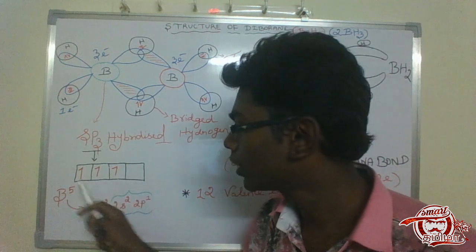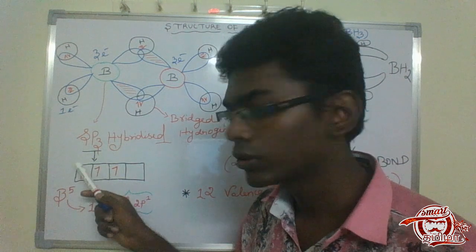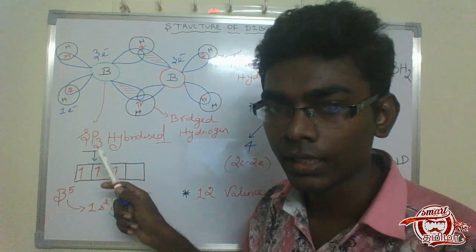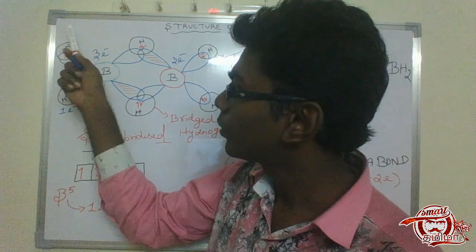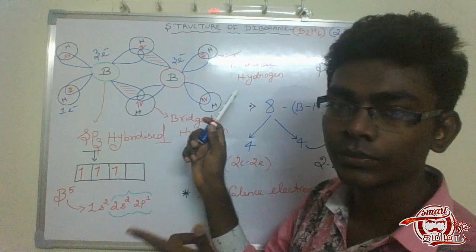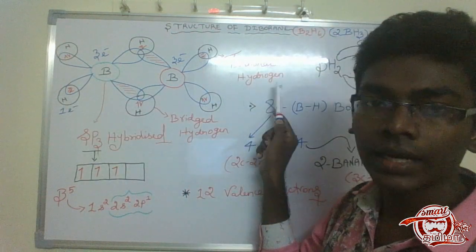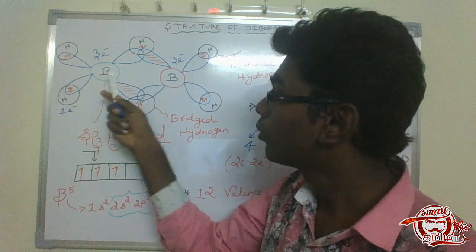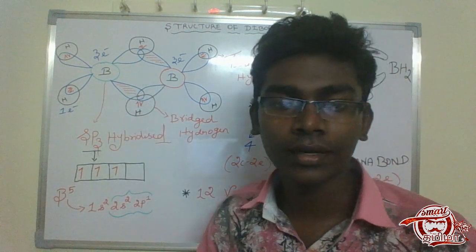Now it is a bond formation. One is S, three is P — so what is the name? SP3 hybridization. That is the name of this. There are six hydrogens — two hydrogens are terminal hydrogen, and the others are called bridge hydrogen.